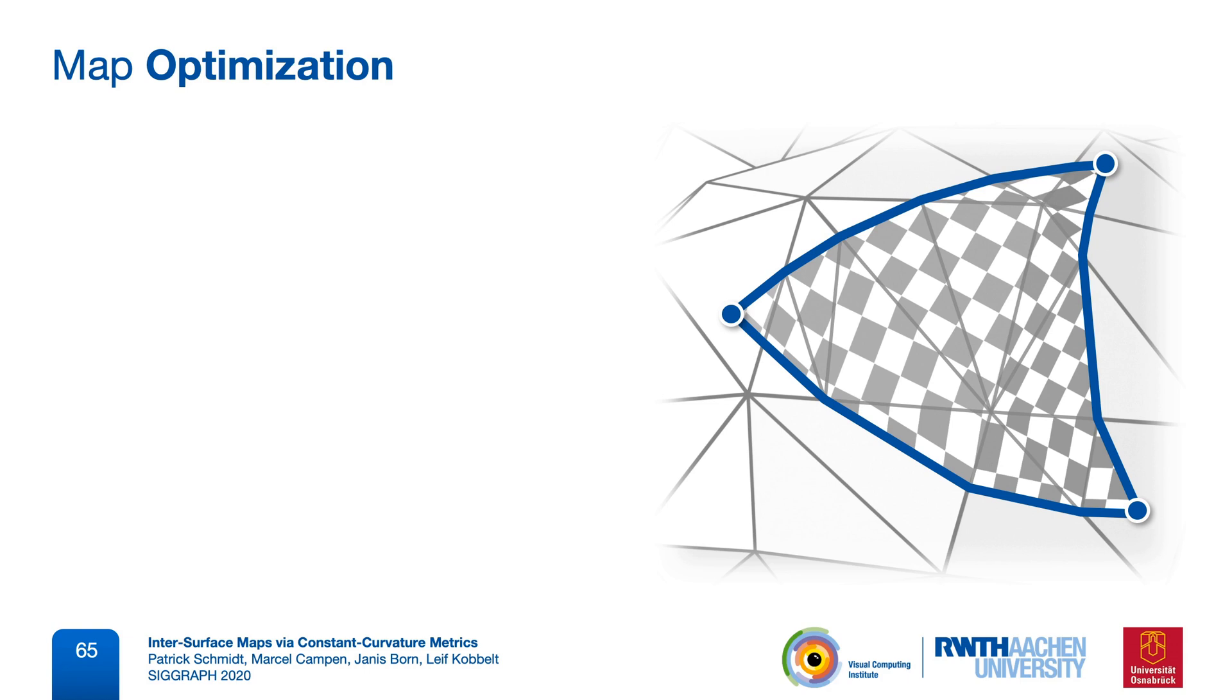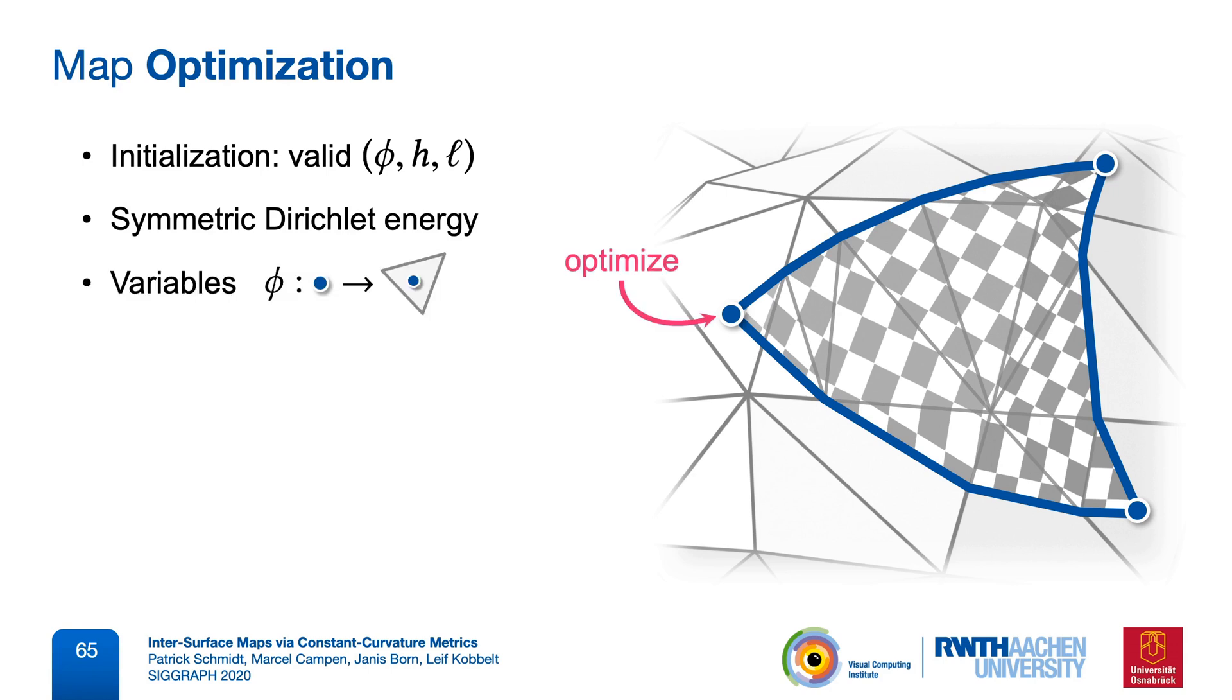Let me very briefly talk about how we use all these constructions in our actual algorithm. We start with an initial map representation, without flipped or degenerate triangles. This can be obtained, for example, by connecting a few landmark correspondences via compatible path networks. After applying our map completion operator, we evaluate an intrinsic distortion measure, like the symmetric Dirichlet energy. We can then compute derivatives with respect to the barycentric coordinates of the source vertices on the target surface. We use automatic differentiation and perform a Newton-style optimization borrowed from our previous paper.